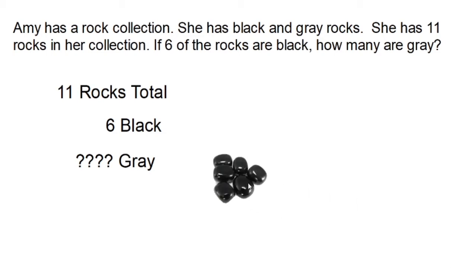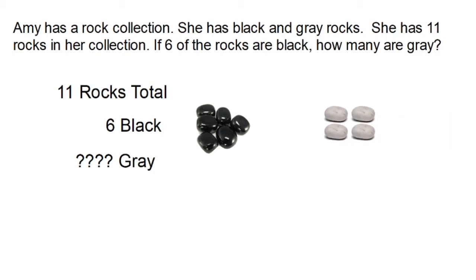The problem tells us that six are black and we need to guess how many grey rocks she has. I know eleven is more than six, so obviously she has to have some grey rocks. So I'm going to guess four grey rocks. And now we're going to see if I'm right by checking if my guess was correct. One, two, three, four, five, six, seven, eight, nine, ten. Well, ten is less than eleven, so I did not guess enough. I need to guess more than four.